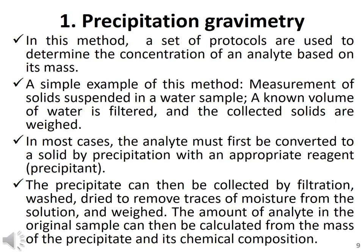A simple example of precipitation gravimetric analysis is the measurement of solid suspended particles in a given sample. An unknown volume of water is allowed to filter through filter paper — the water passes out and insoluble residues are stopped by the filter paper. These solid particles are collected, and the difference in weight of the sample is used to estimate the suspended solids.